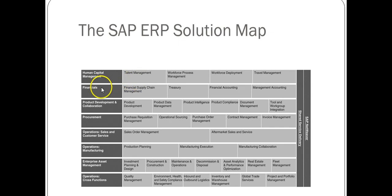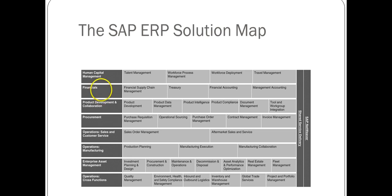SAP has many modules — each one you see, such as human capital and financial, is a separate ERP module. If you're a company implementing SAP, you could go for any one or more of these modules depending on your investment and requirements. For example, if you want the finance module you get the SAP financial module components, or if you want sales and customer service you get those specific components.